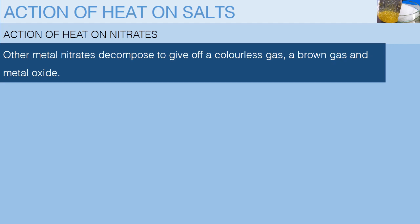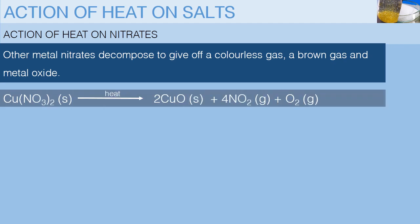Do you remember the permanent changes in Form 1? At that time, we heated copper nitrate. What were the products? I guess you said these products. Nitrogen 4 oxide gas and oxygen gas plus a black solid of metal oxide.